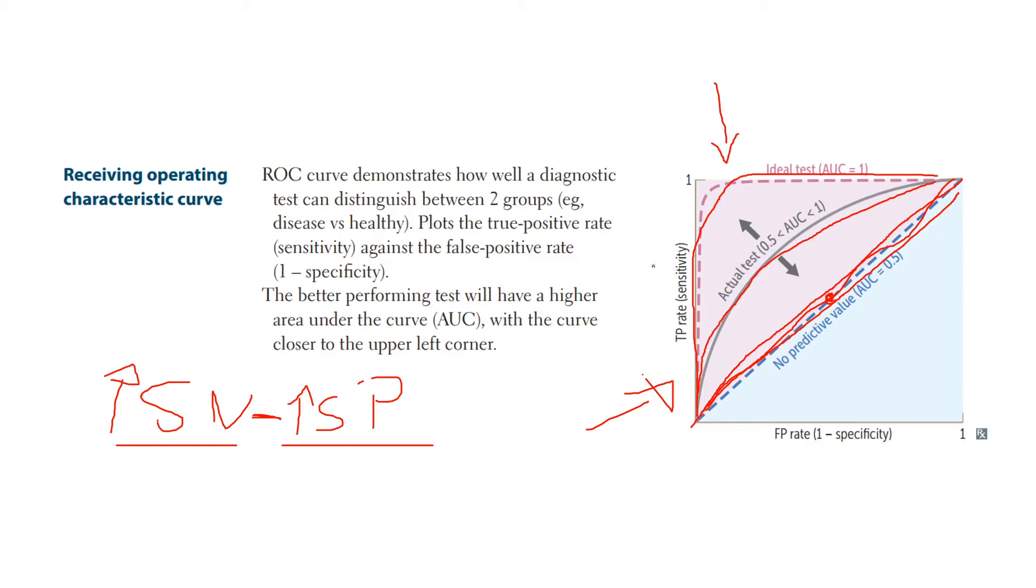I'd like to just harp on one last point. Sometimes, instead of saying the better performing test, they'll sometimes throw a curveball at you. They'll tell you which of the following curves best represents the ideal test that we need to use for a screening test. And sometimes they might say a confirmatory test. So what's the difference between these two?